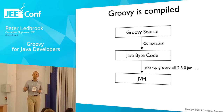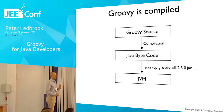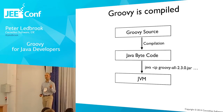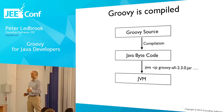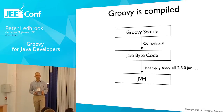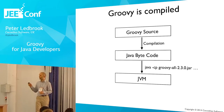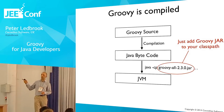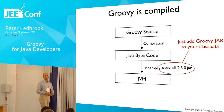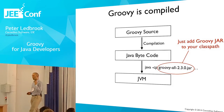Groovy itself is a compiled language. I'm going to be talking about scripts, and it's going to look like it's interpreted. It's not. There is always a compilation step because it always has to go into bytecode, which is then run on the JVM. What this means is once you've compiled a Groovy class, you can run it using the standard Java command line. All you have to do is add the Groovy jar file to the class path, plus all the jars for any libraries you're using.